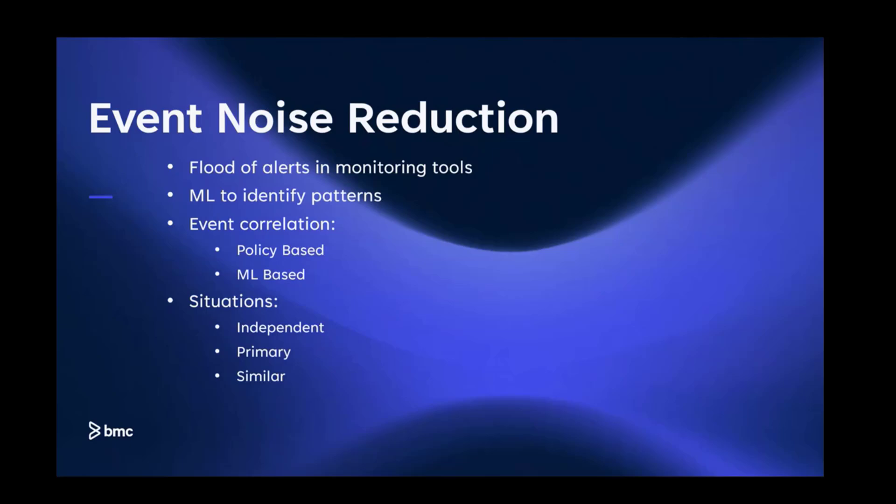These correlated events are formed into a situation. When AIOps correlates events, it creates a situation. There are three types of situations: independent, primary, and similar situation.